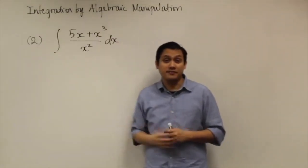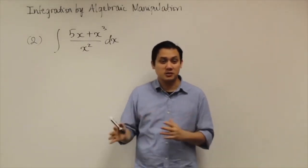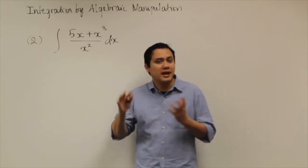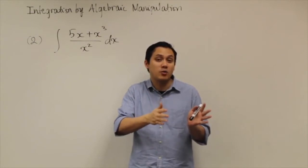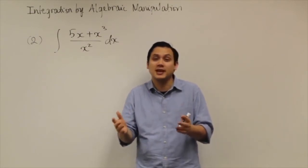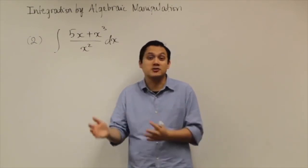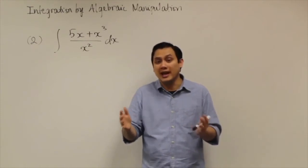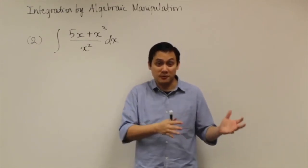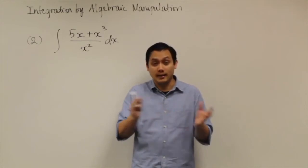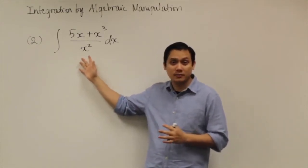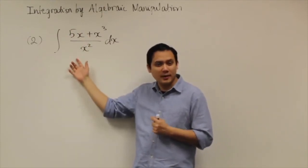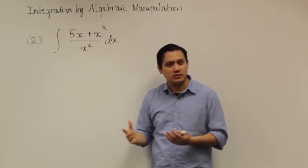Here's the second problem. In the first problem, we had two functions multiplied together — x to the fifth times (1 plus x). To tackle that, we distributed x to the fifth power into the parentheses to get x to the fifth plus x to the sixth, then separated into two different integrals and used the power rule to find the anti-derivative. For the second problem, there's another type of integration by manipulation. This problem has a fraction.